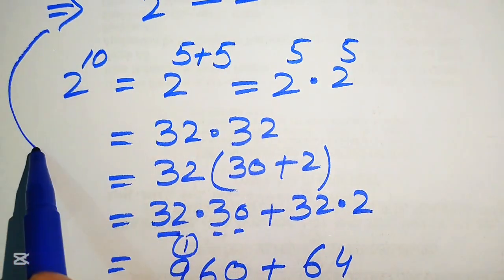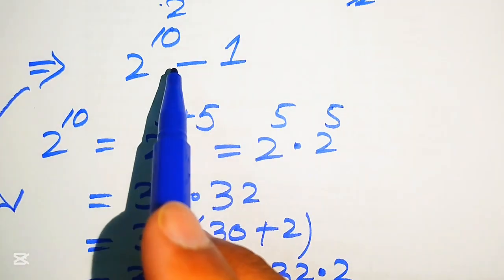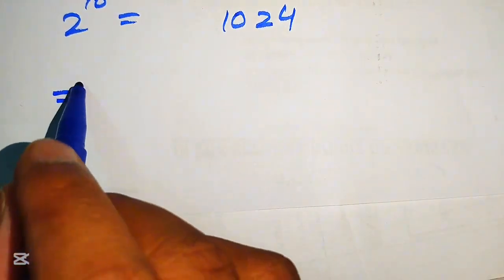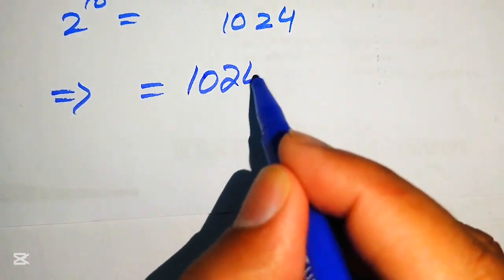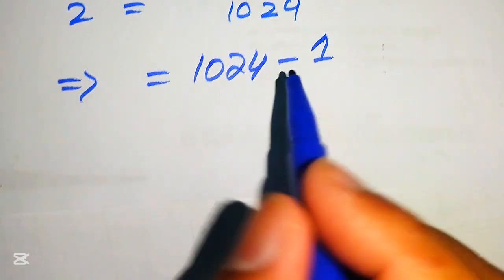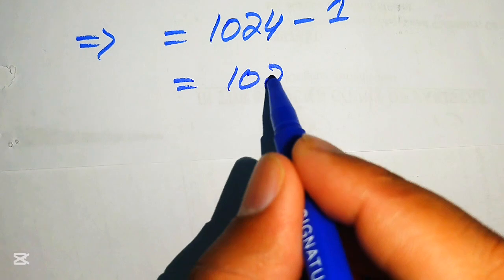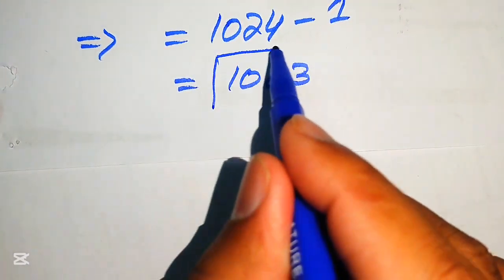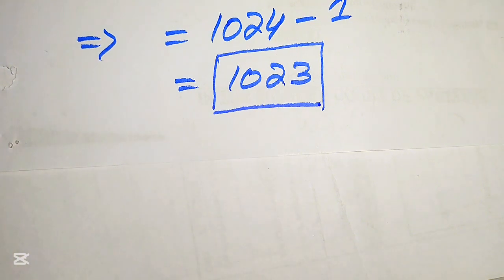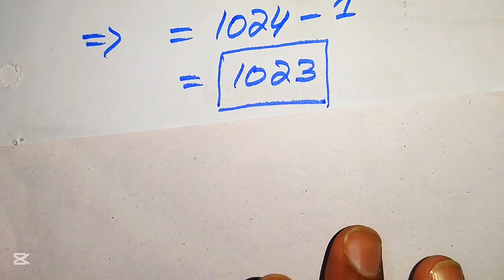Now we substitute back: 2^10 − 1 = 1024 − 1 = 1023. This is the final simplified answer from Method 1. Now we move forward to Method 2 and solve the same problem again.